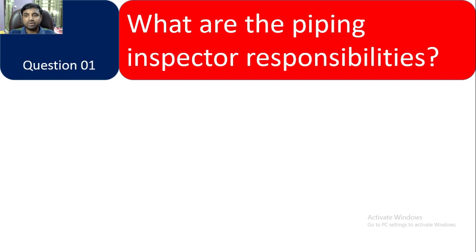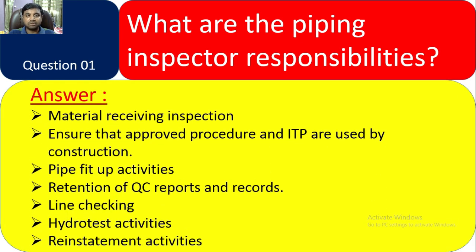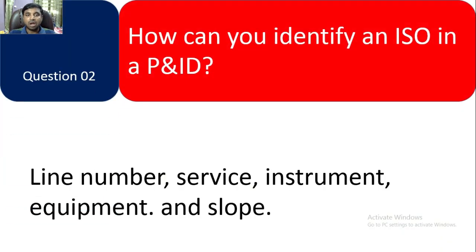Question 1: What are the piping inspector responsibilities? Answer: Material receiving inspection — ensure that approved procedures and ITP are used by construction. Pipe fit-up activities, retention of QC reports and records, line checking, hydro test activities, and reinstatement activities. These are the main important responsibilities of a piping inspector, though there are many others.